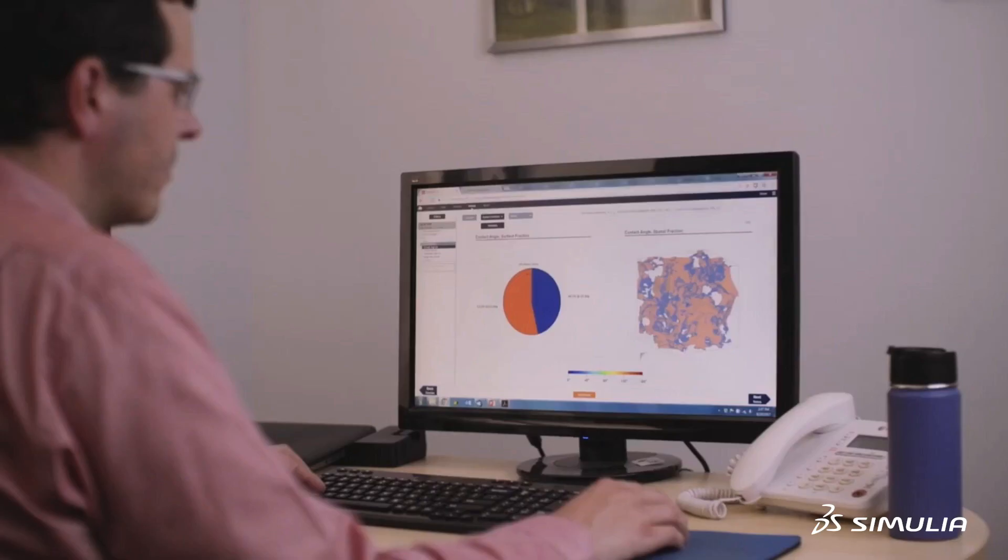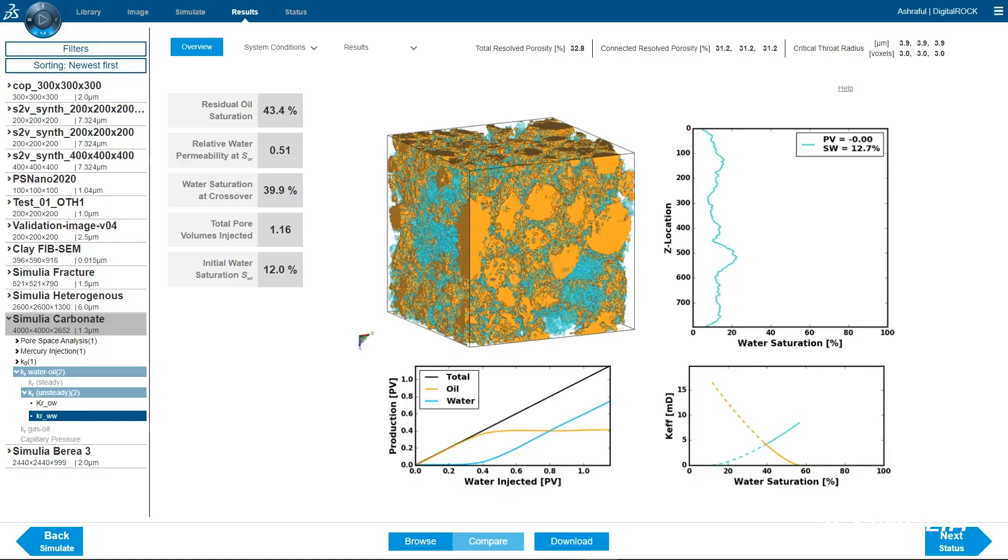Digital rock starts with a high-resolution 3D image of a rock sample. Then fluid flow simulations are run on this digital representation of the rock. Our technology uses the true geometry of the pore space and the most advanced multiphase flow physics in the world.